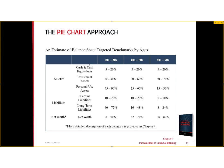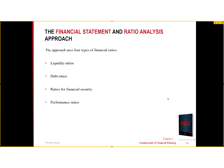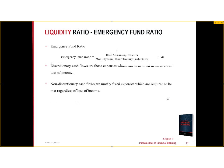Here are benchmarks by age. Cash and cash equivalents may actually be higher earlier on. Investment assets should increase significantly as a portion of total assets over time, while liabilities would be expected to go down as remaining income-earning years decrease. The basic four types of financial ratios are: liquidity ratios, debt ratios, ratios for financial security, and performance ratios.